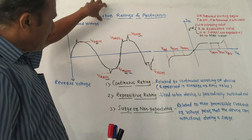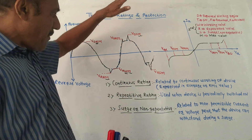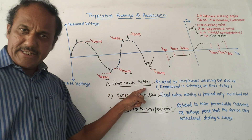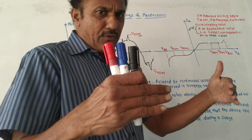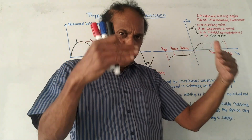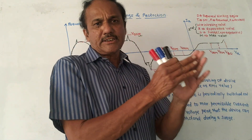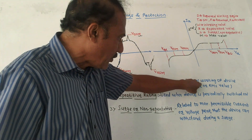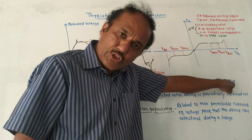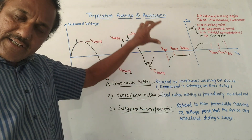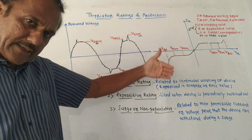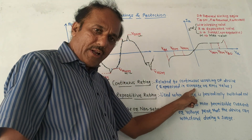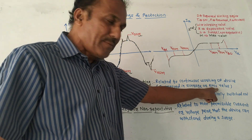First let us talk about thyristor or SCR ratings. Mainly there are three types of ratings. First is continuous rating. As the name indicates, if you are using SCR periodically or continuously, then such type of ratings are used. These ratings are related to continuous working of the device, and voltage and current are usually expressed in terms of RMS value or average value.